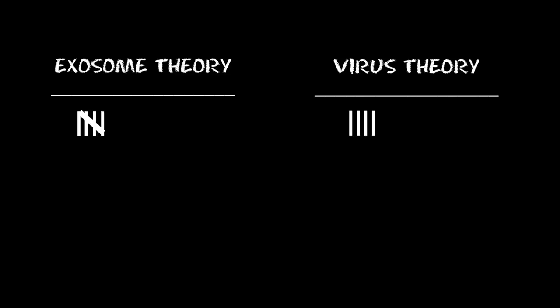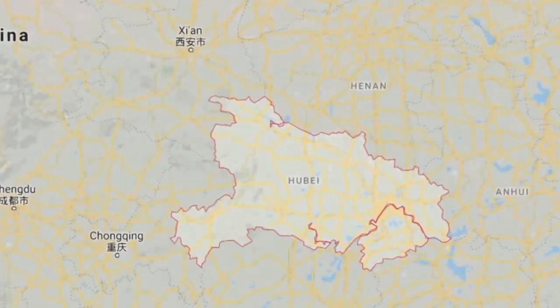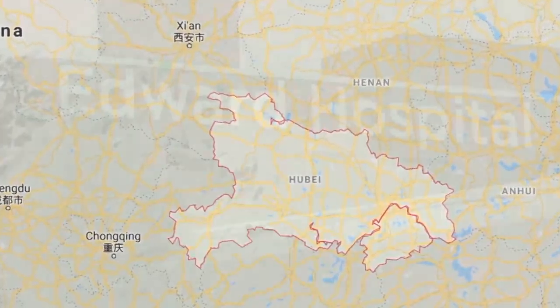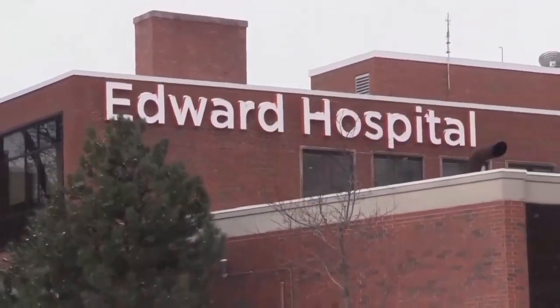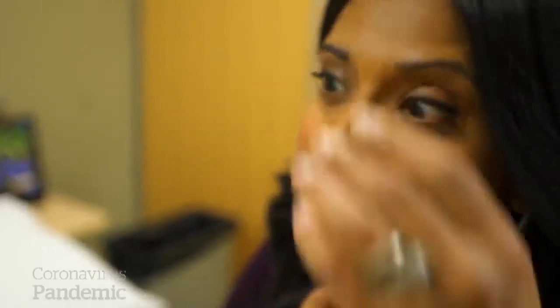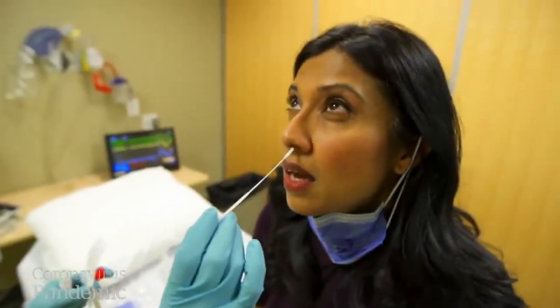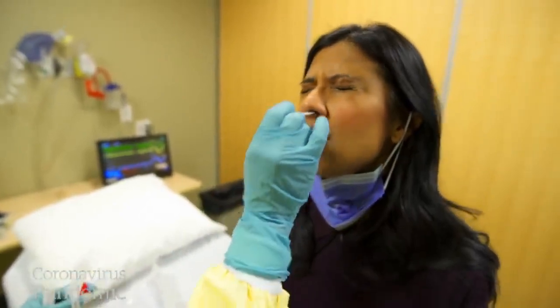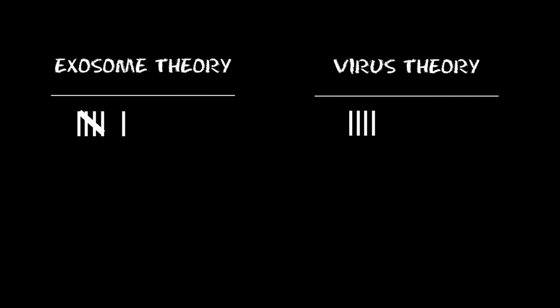Let's take a look at the first case of transmission in Illinois. A woman traveled to Wuhan, came back, and both she and her chronically ill husband ended up testing positive. Medical authorities then tracked over 300 people who had had close contact with them to see who acquired the virus. And guess what? Zero positives. This again would make sense in exosome theory since exosomes are not contagious, but it would not make sense for virus theory where this is supposed to be an infectious virus.